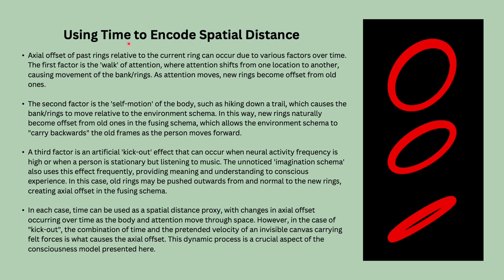Taking it one step further: what if time alone encodes spatial information? The neural action potentials' location wouldn't matter — only the temporal code would. About 100 milliseconds would be dedicated to representing the phase around the ring, and you'd use cyclic precession — earliness or lateness — to carry the paint to the right location. This is extremely speculative, just throwing it out there.